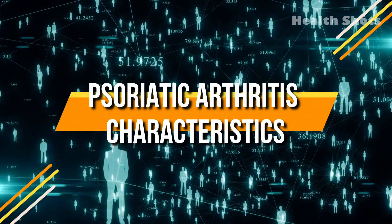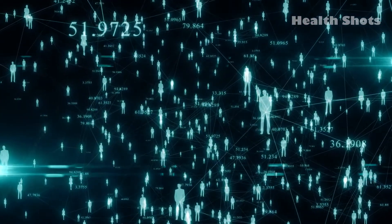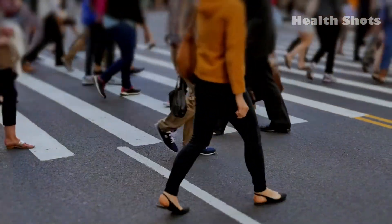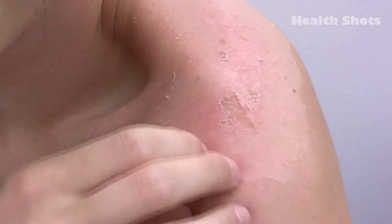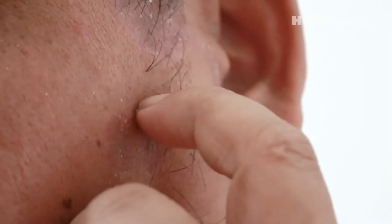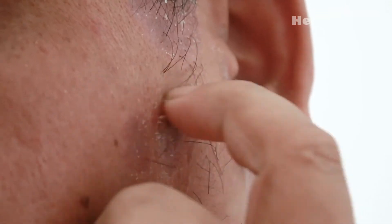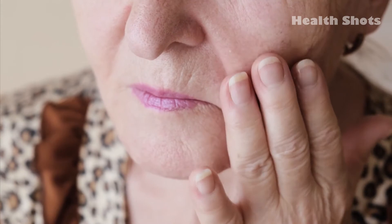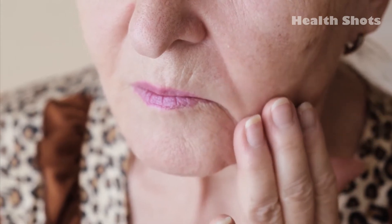Psoriatic Arthritis Characteristics. Did you know that psoriatic arthritis affects around 30% of people who have psoriasis? But you could still have psoriatic arthritis even if you never had psoriasis affecting your skin. This disease affects both sexes, most commonly adults and elderly. One of the most common symptoms of psoriatic arthritis is the development of red and shiny patches called plaques on the skin, built up from excess skin cells.